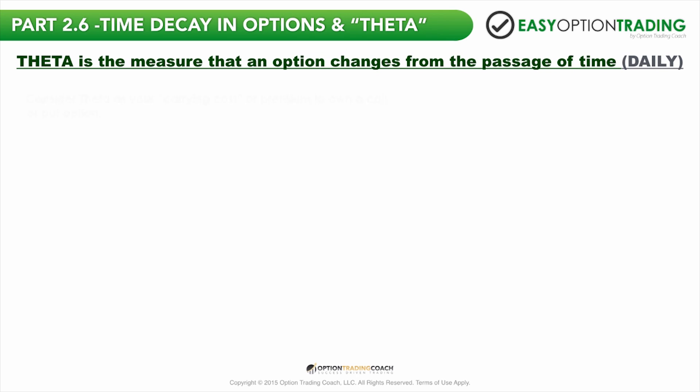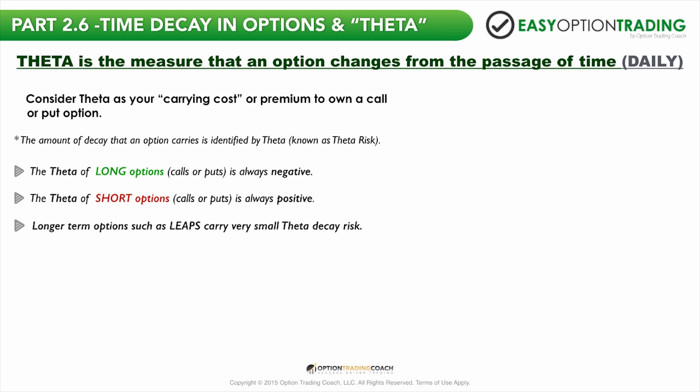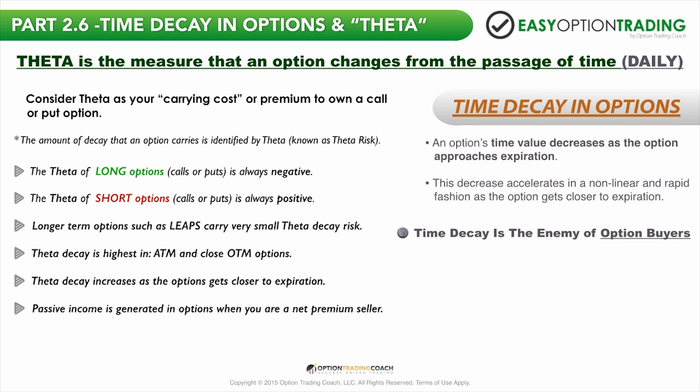Theta is the measure of how much an option changes from the passage of time, and it's calculated on a daily basis. The amount of decay that an option carries is identified by the theta, known in option trading terms as theta risk. Longer term options such as LEAPs carry very small theta decay risk. You can do very well in a directional market — up or down — and be able to minimize that theta decay that really cripples a lot of new traders. Time decay is the enemy of option buyers and the friend of option sellers.